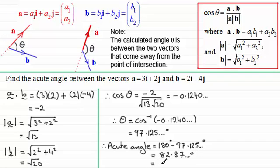Working that out you end up with 82.87 and so on degrees. And if you give this to say two significant figures then this is going to be 83 degrees to two significant figures there.